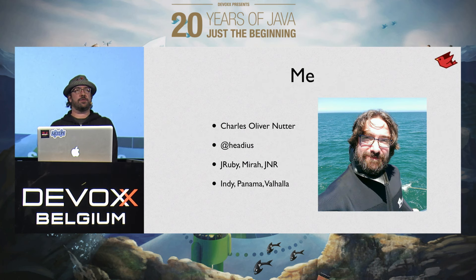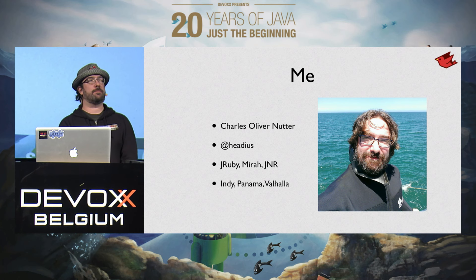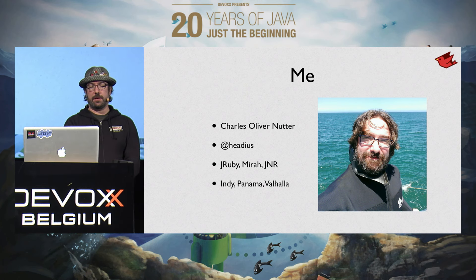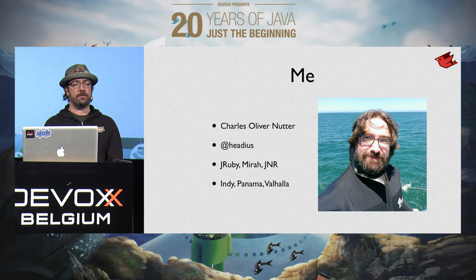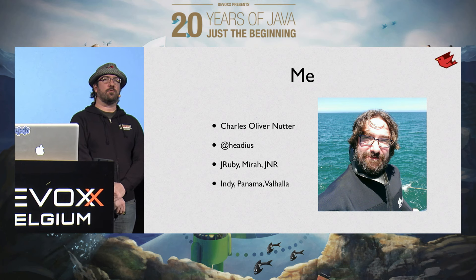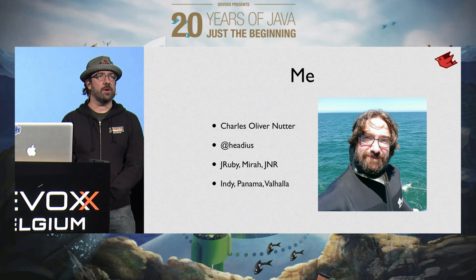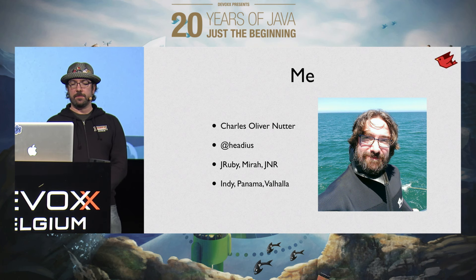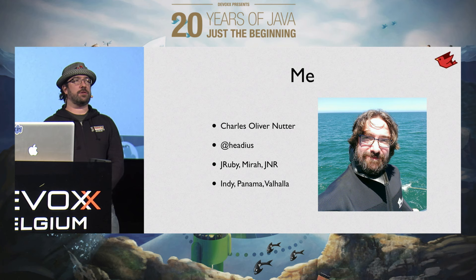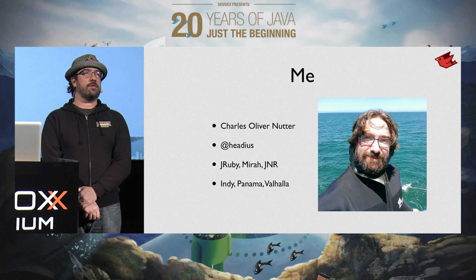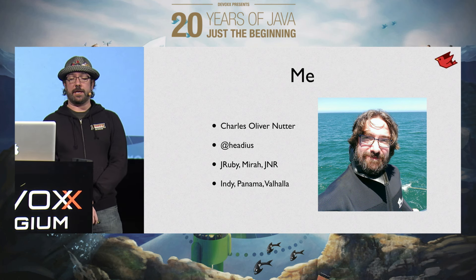A bit about me — Charles Nutter. I've worked on JRuby for a long time, nine years working on it full time at various companies. We're very thankful to folks like Sun Microsystems, Engine Yard, and now Red Hat for funding our work. I also worked on a language called Mirah, which is basically a Ruby syntax for writing Java code. And there's a suite of projects called JNR, the Java Native Runtime, which makes it easy to call down to native code and integrate with native libraries.